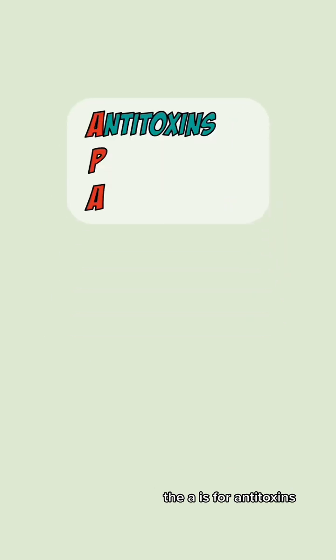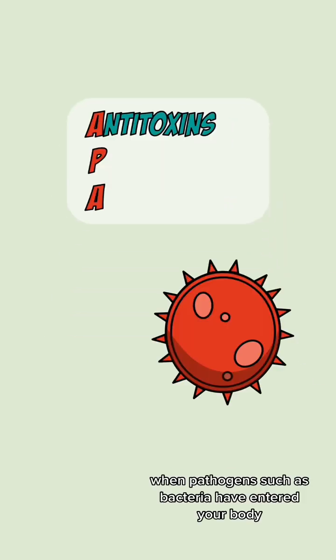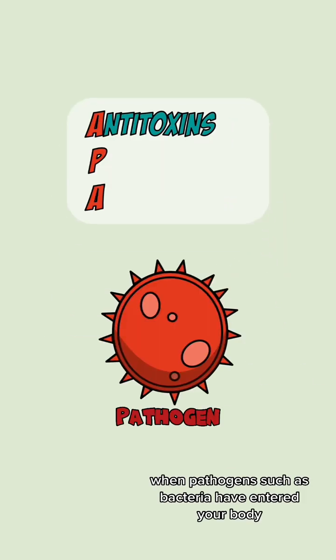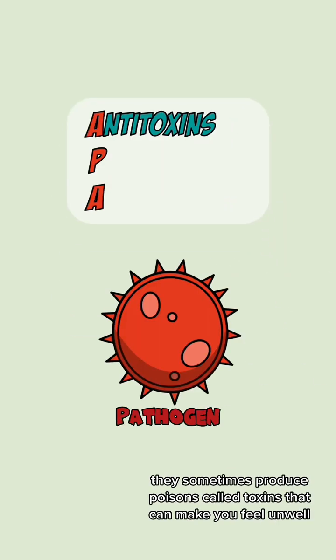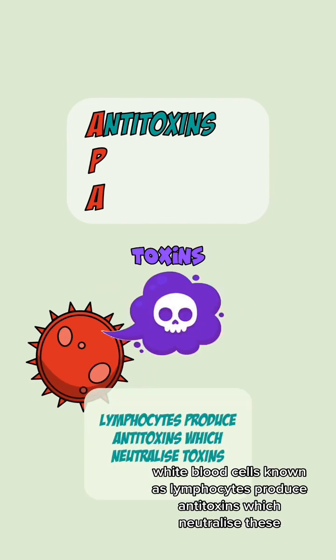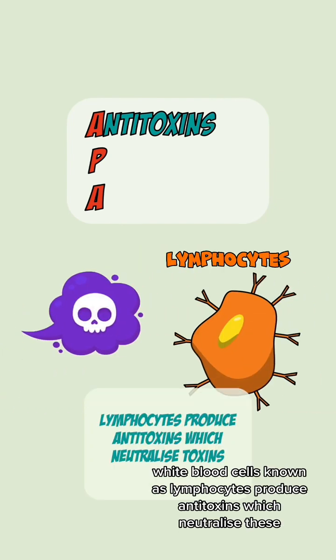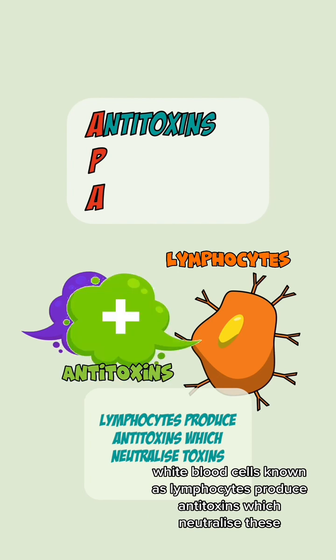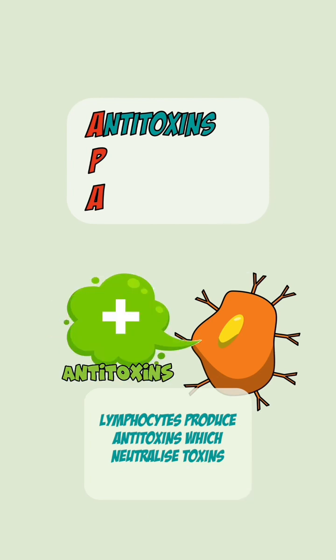The A is for antitoxins. When pathogens such as bacteria have entered your body, they sometimes produce poisons called toxins that can make you feel unwell. White blood cells known as lymphocytes produce antitoxins which neutralize these.